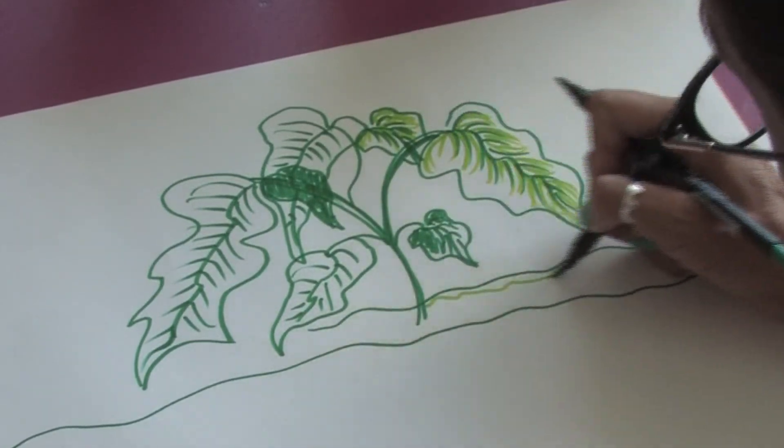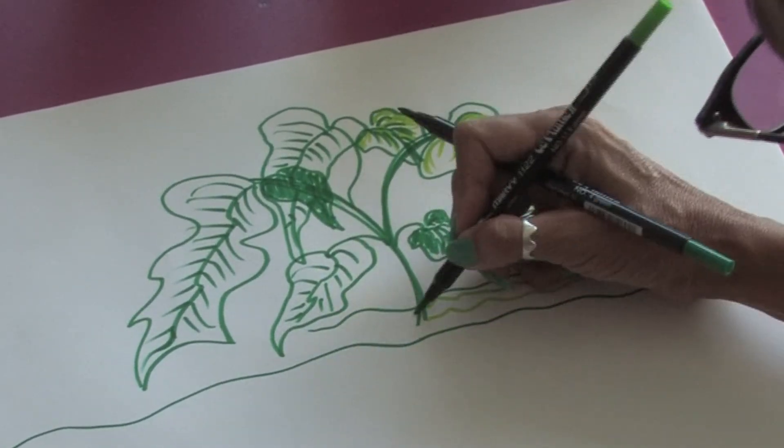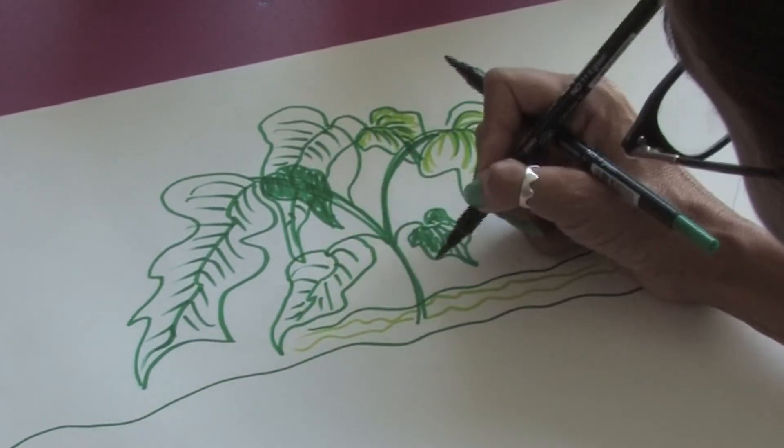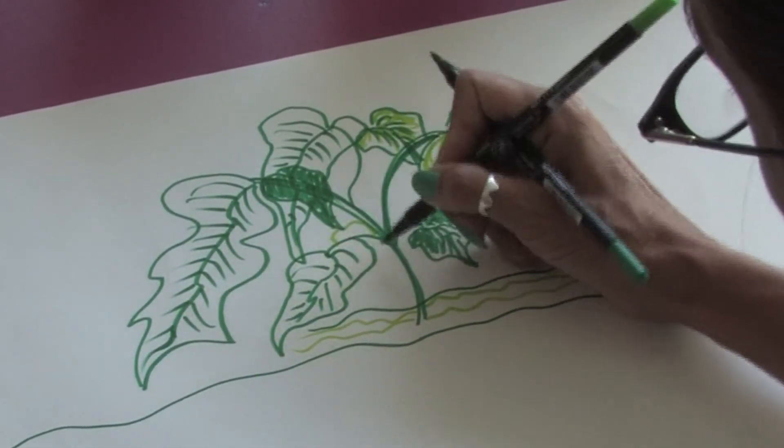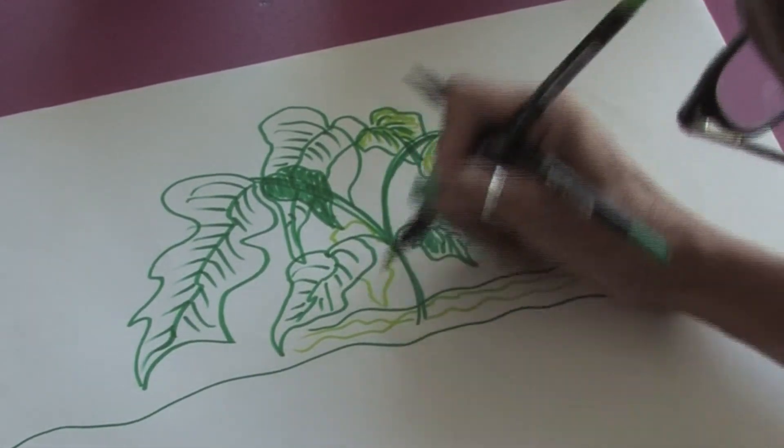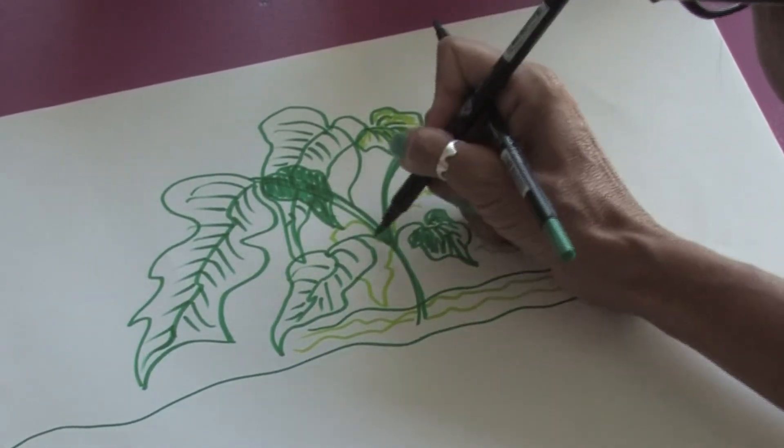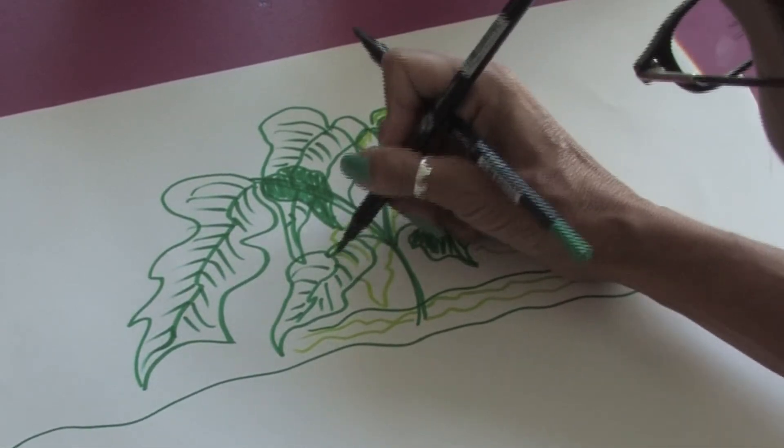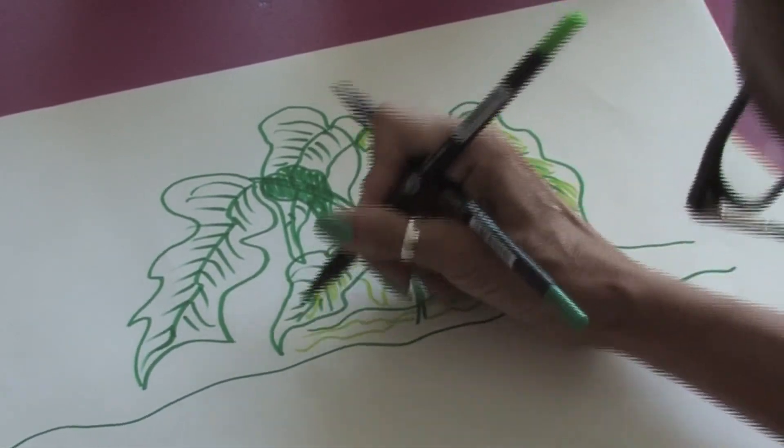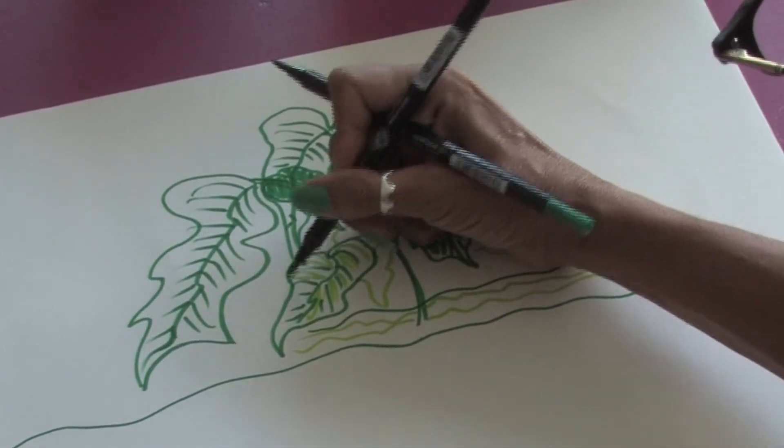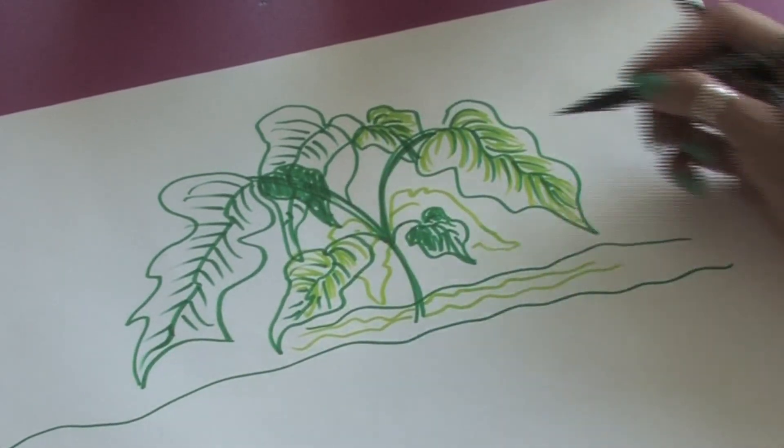And if you like, you can just add a little bit more detail to your ground line as well. And maybe even just add a few little lighter leaves into it. Just like so. And if you keep going in this fashion, you will have a beautiful elephant ear plant.